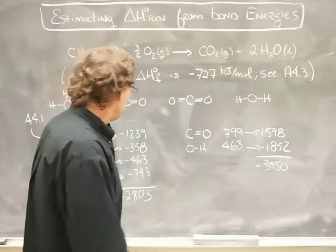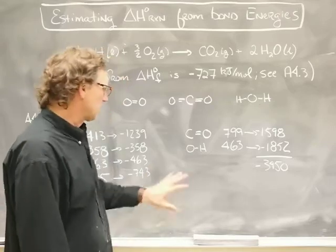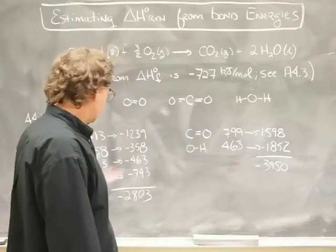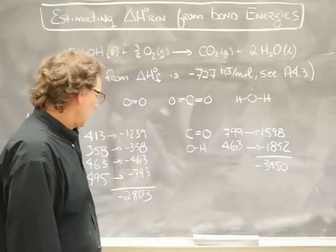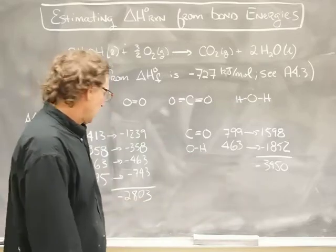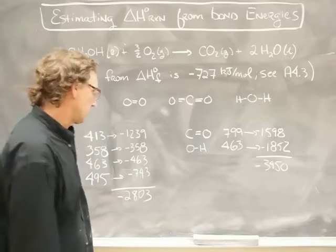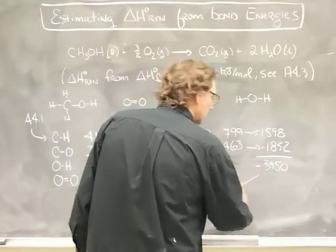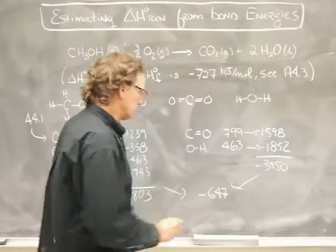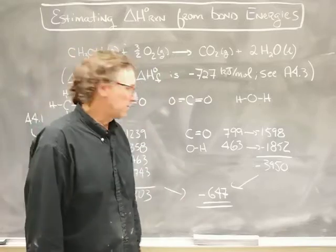Now, to get the estimate for the enthalpy of reaction based on these numbers, I'll take the bond energies of the products and subtract away the bond energy of the reactants. So that's minus 3450 minus the minus 2803, which together add up to minus 647 kilojoules per mole. That's our estimate of the enthalpy of reaction.